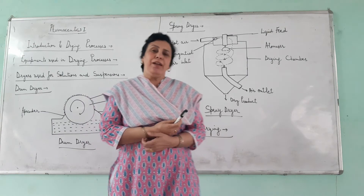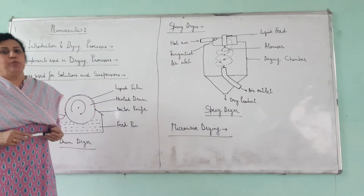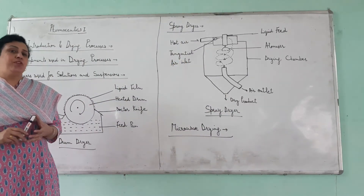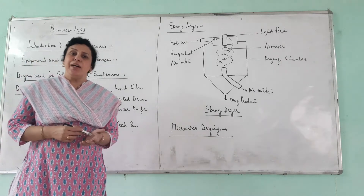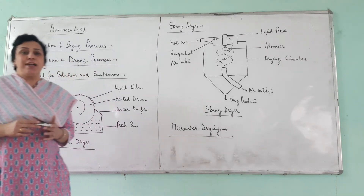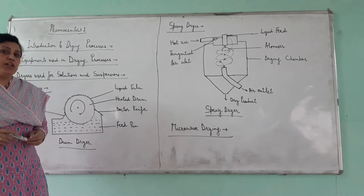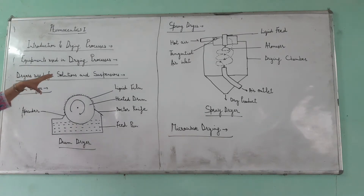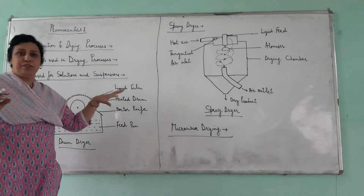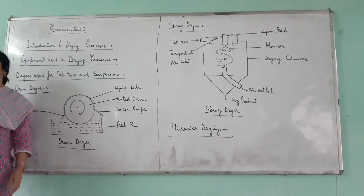We have already discussed what is drying, what is the theory of drying, and what are the basic activities of drying. We have discussed spray dry, tunnel dry, roti dry, fluidized bed dry, sweat dry, vacuum dry, and freeze dry. Now we are going to start on the next topic: dryers used for solutions and suspensions.